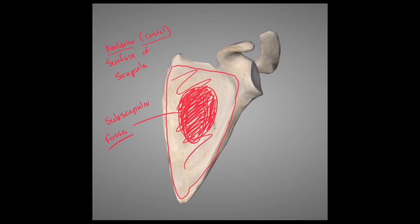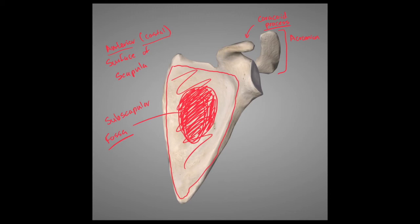This projection here is called the acromion of the scapula. This might sound similar to the acromial extremity of the clavicle — and that's correct, because the acromial extremity of the clavicle articulates with the acromion of the scapula. Just like the sternal extremity of the clavicle is right up against the sternum, the acromial extremity of the clavicle is right up against the acromion of the scapula. This other projection here is called the coracoid process of the scapula — a process is a projection coming off the bone.